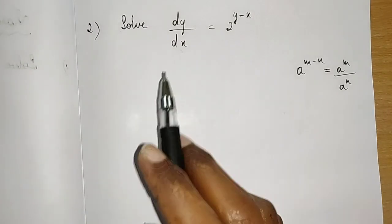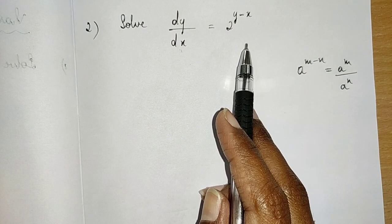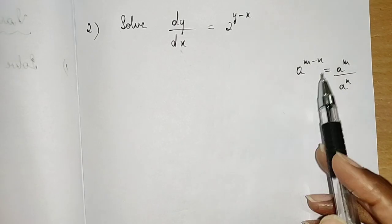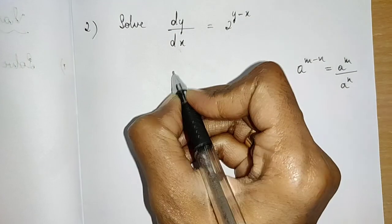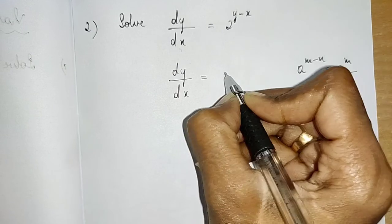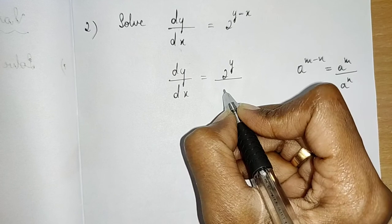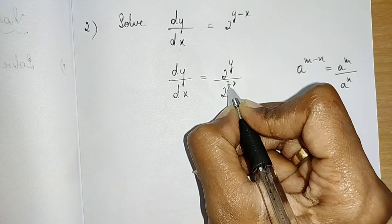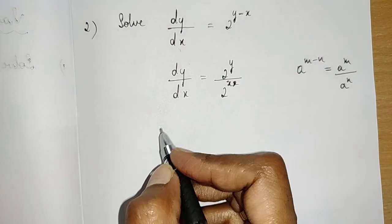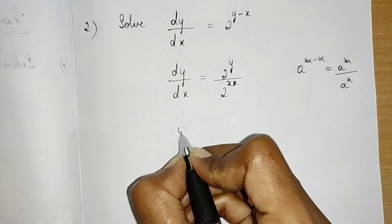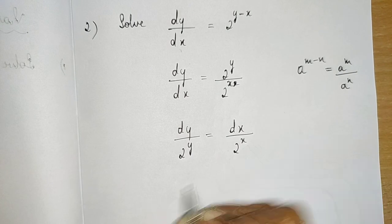Next question: solve dy/dx = 2^(y−x). Using the law a^(m−n) = a^m / a^n, we write this as dy/dx = 2^y / 2^x. Separating variables: dy / 2^y = dx / 2^x.